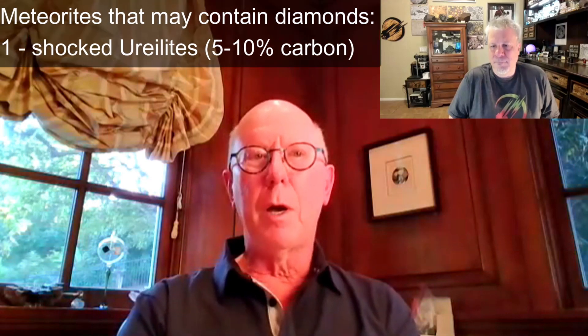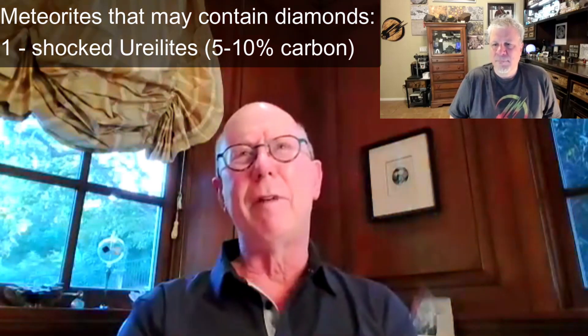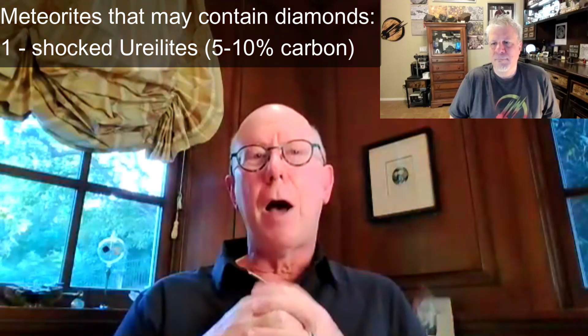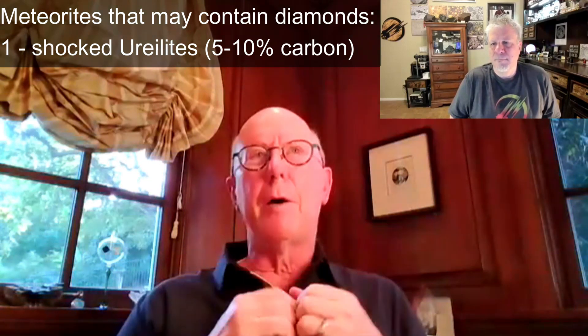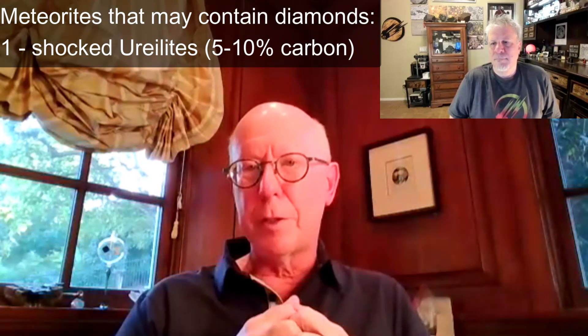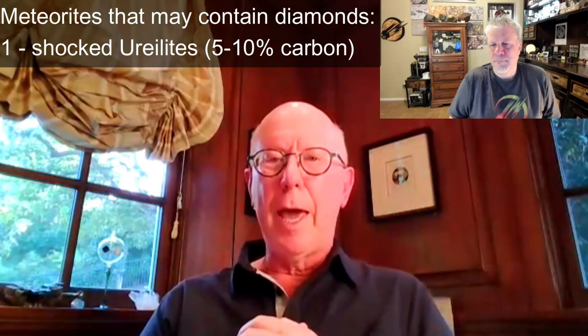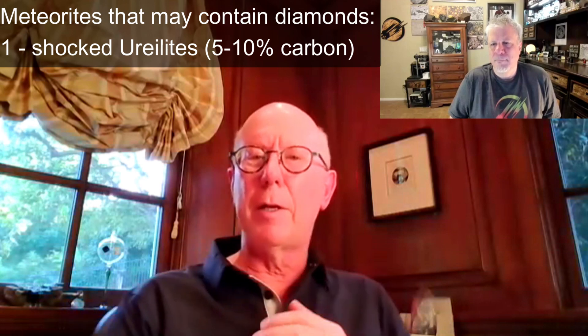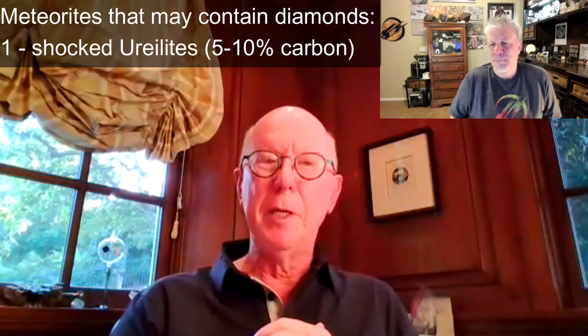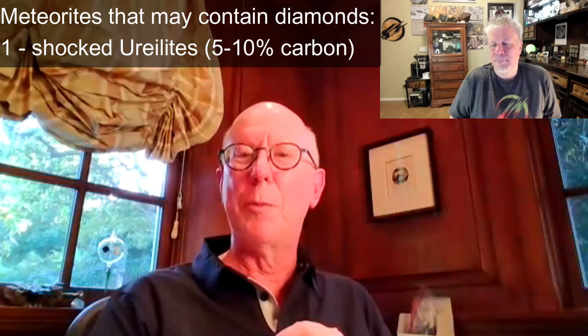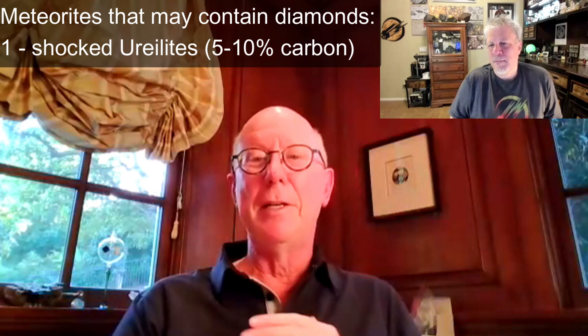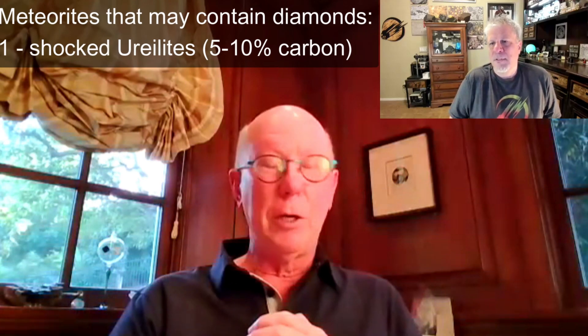There are three main groups of meteorites where you can find diamonds. The first are ureilites. Ureilites are between five and ten percent carbon themselves, and the highly shocked ureilites — where they've faced a lot of physical impact — will often have these nano diamonds in them. There's not much to see; you need an electron microscope or a pretty powerful loupe or microscope to see the nano diamonds in ureilites.